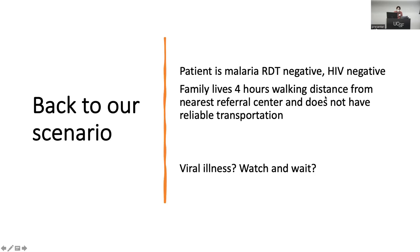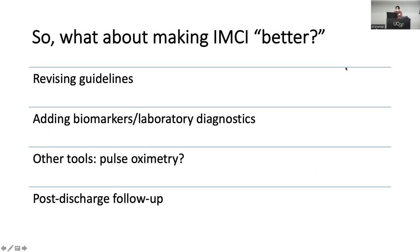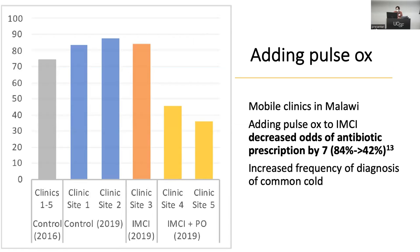Back to our scenario: let's say your patient in Uganda is malaria-negative, HIV-negative, and lives four hours away. We're back to the same question — do we assume this is a viral illness, do we watch and wait? The next thing I'm interested in is how to make guidelines better: revising them, adding accessible point-of-care testing, and including a component for who gets follow-up and when.